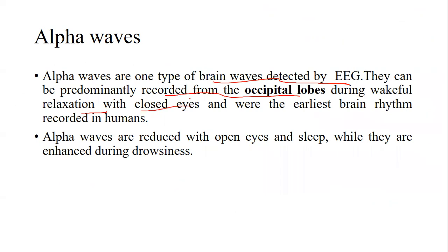Alpha waves were the earliest brain rhythm recorded in human beings. They are reduced in case of open eyes and during sleep, while they are enhanced during drowsiness and with closed eyes in a relaxed state.